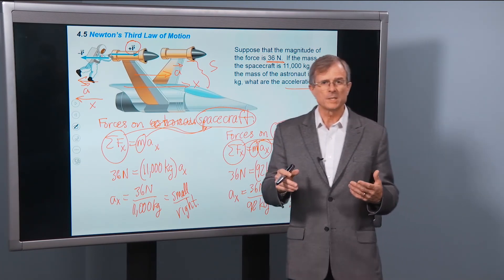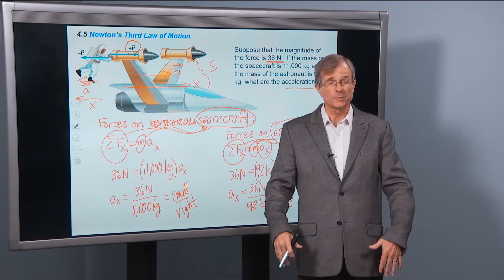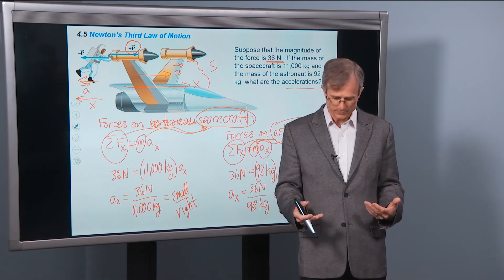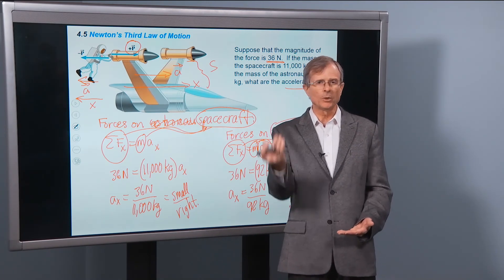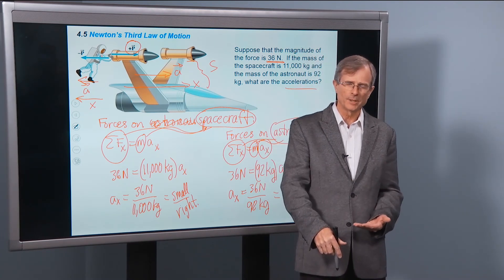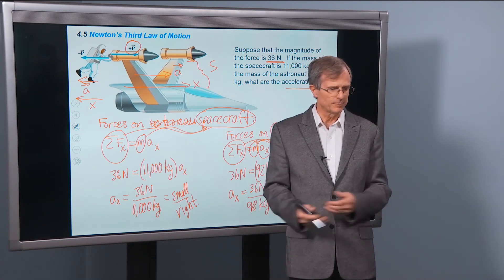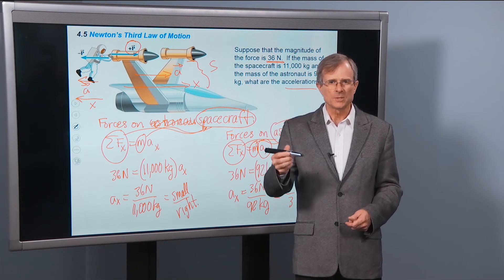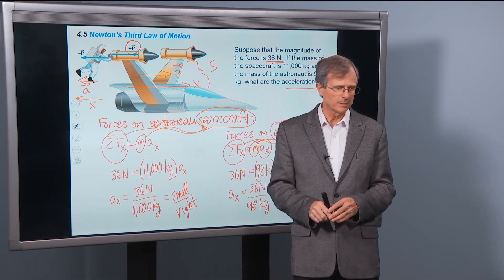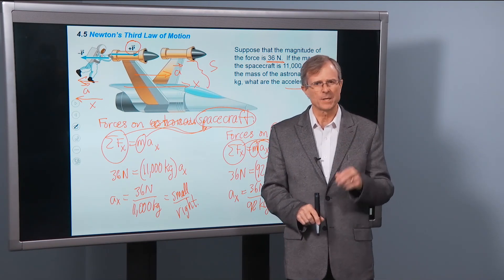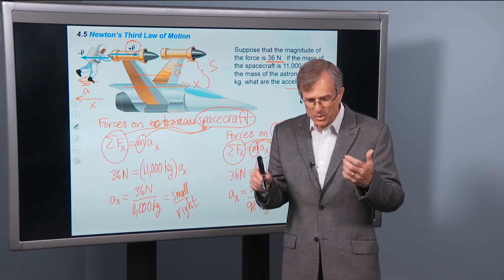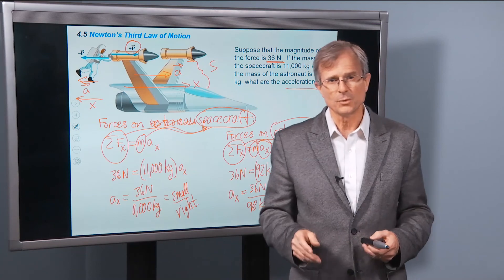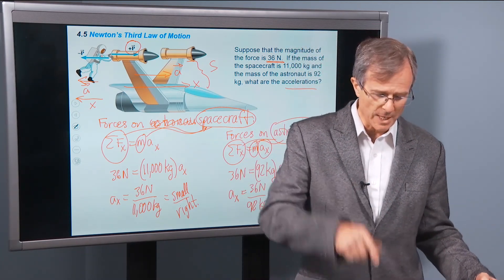An extreme example: the earth exerts a downward gravitational force on me, and I also exert an upward gravitational force on the earth. I once worked out that with my 28-inch vertical leap playing volleyball, the force I exert pushes the earth down by about the size of an atom. Even though the forces — the gravitational force the earth exerts on me and the force I exert upward on the earth — are exactly the same magnitude, the earth barely moves.